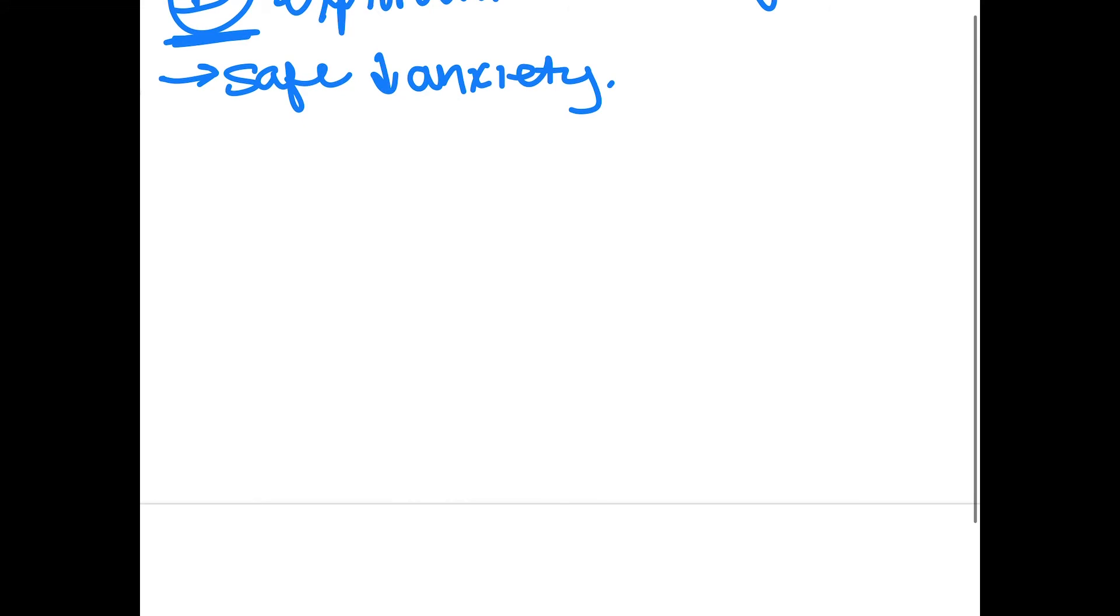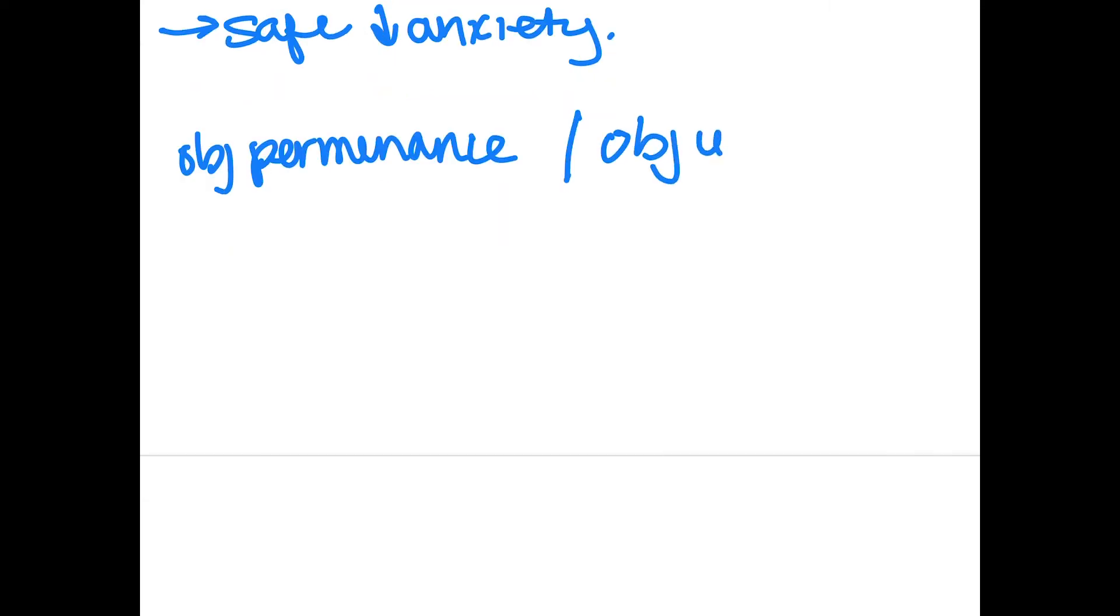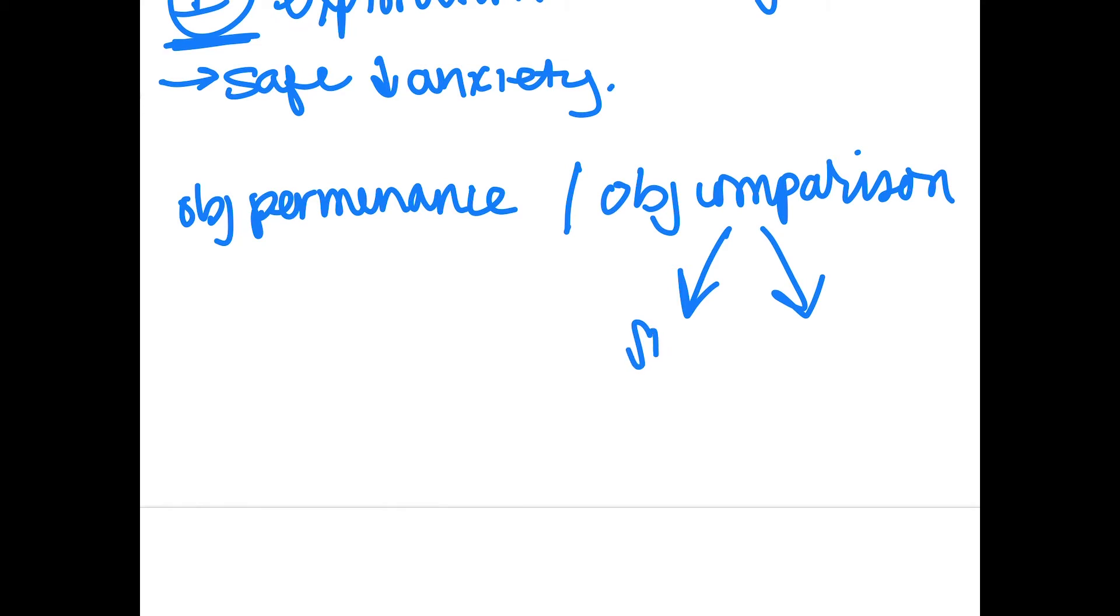Other aspects of the little room include the differences between object permanence and object comparison. Object comparison is essentially taking two objects that are the same in one aspect but different in others. So for example, you could have things that differ by size.